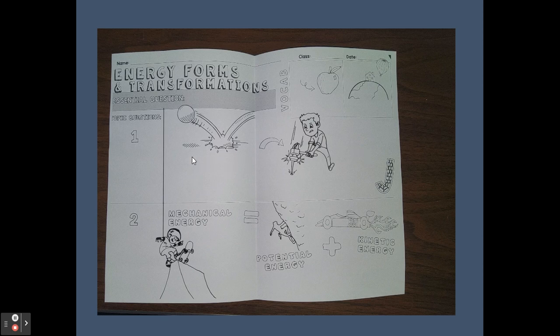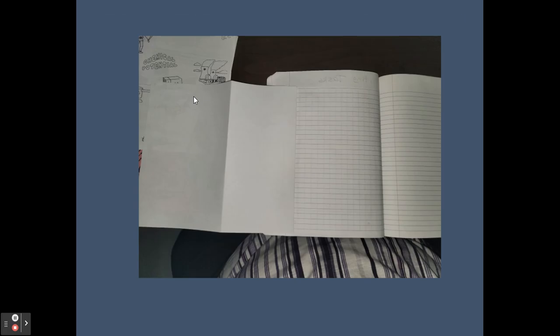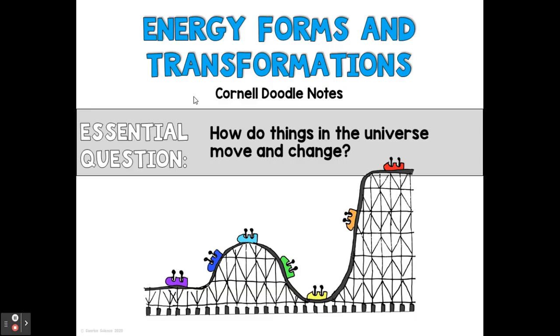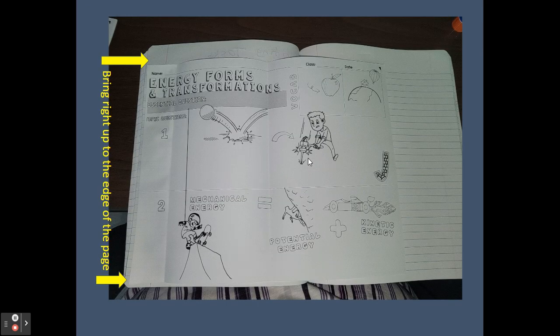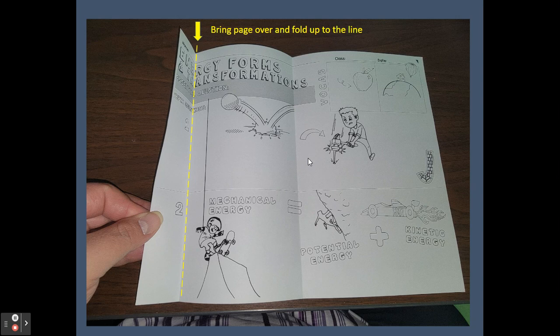And then everything that we fill in next to it is going to be the answer or the main idea, definitions, questions, and information that would answer that question. All right, so our essential question is—let me back and double-check, I want to read it correctly—how do things in the universe move and change? So that's what we're going to answer with these seven questions that we're going through. So the way that we're going to put these in our journals...